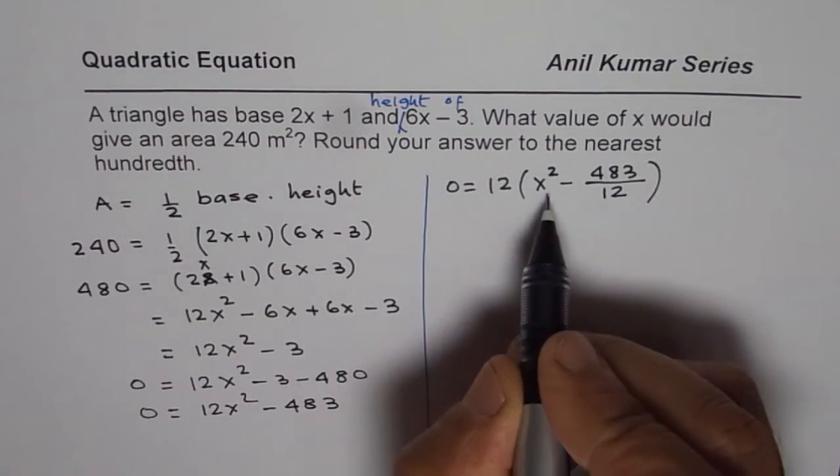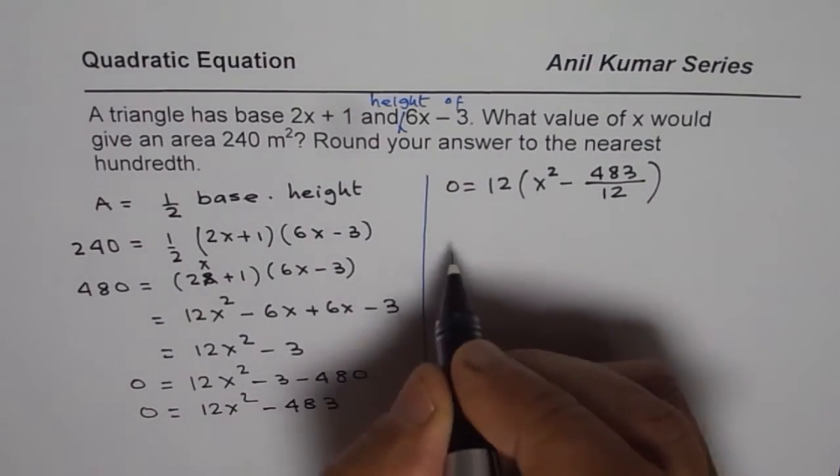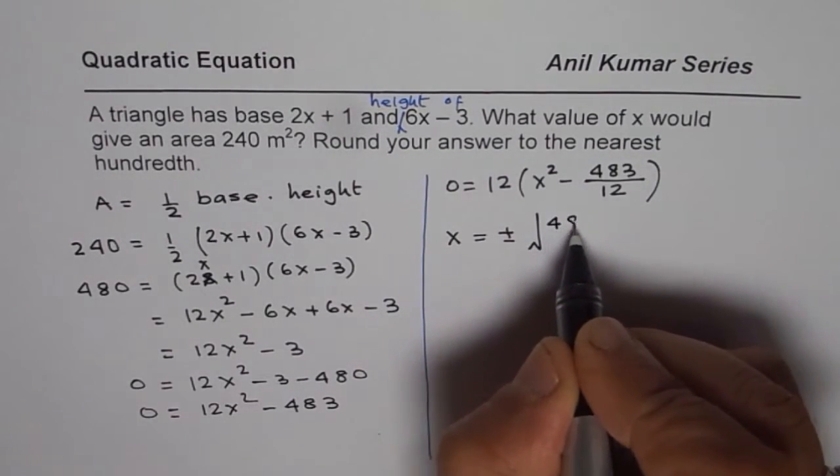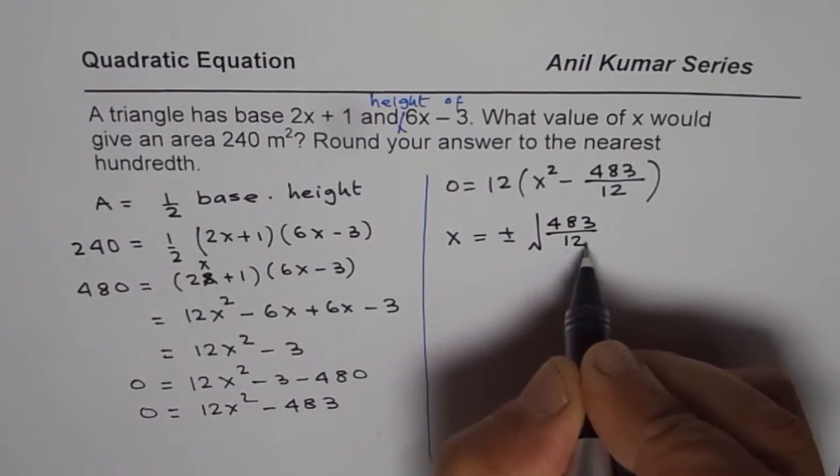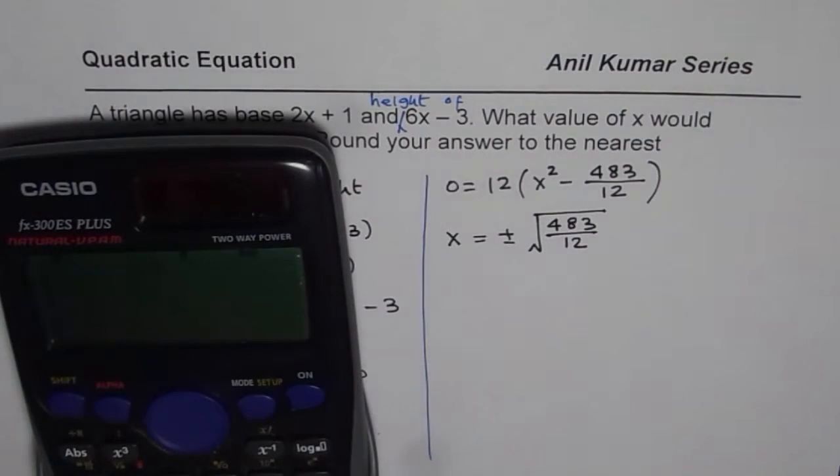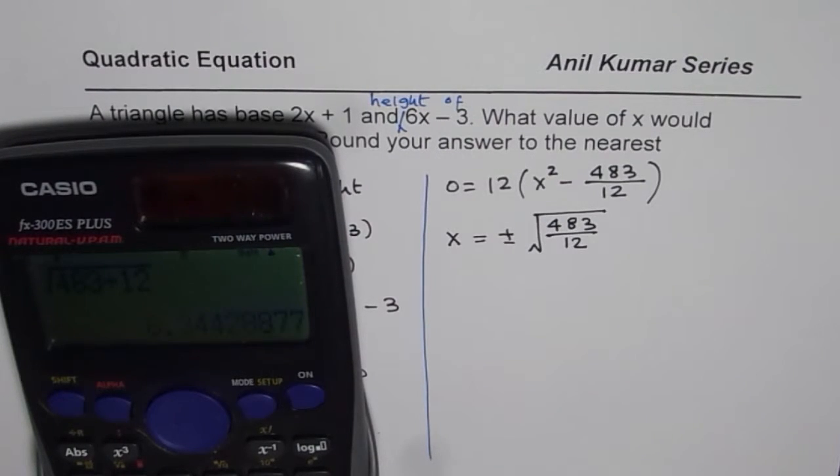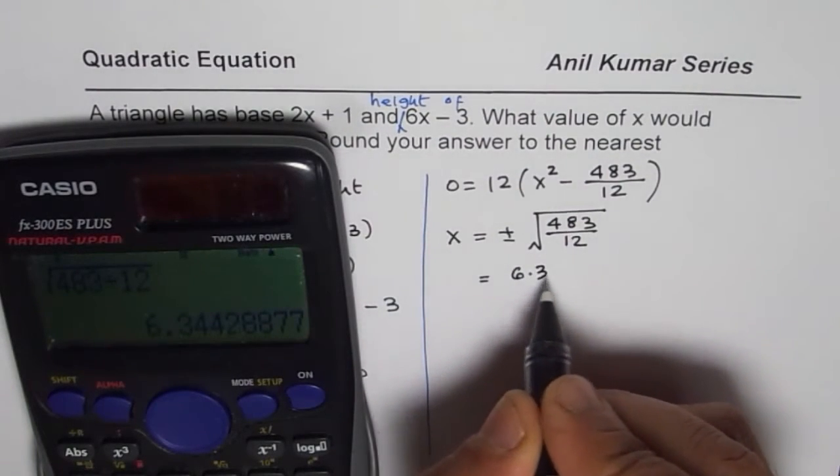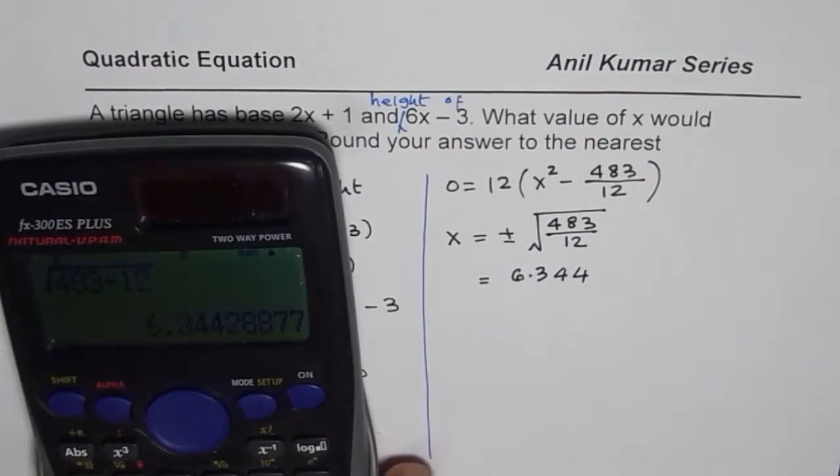That gives us two possible values for x. And those values are plus minus square root of 483 divided by 12. At this stage, we can use the calculator and find the answer. We have square root of 483 divided by 12. That gives you 6.3442.